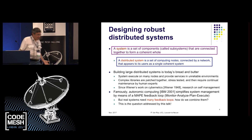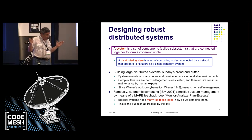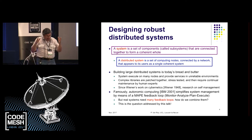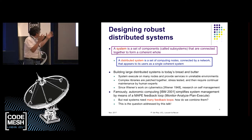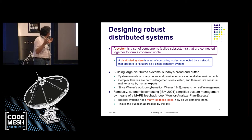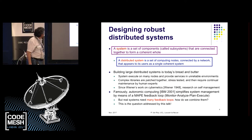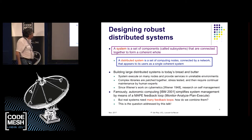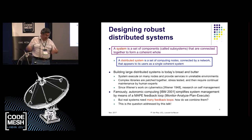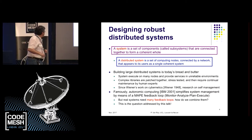We want to build robust distributed systems. A system is just a set of components connected together that make a coherent whole. There's a very general theory of building systems, starting with Norbert Wiener's work on cybernetics in 1948 — a very nice book, which I recommend. A distributed system is a special case: a set of computing nodes connected by a network that appears to its users as a single coherent system.